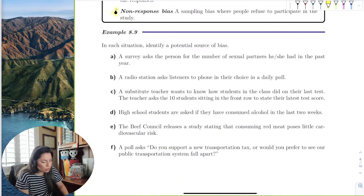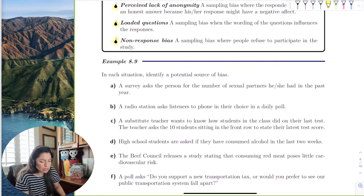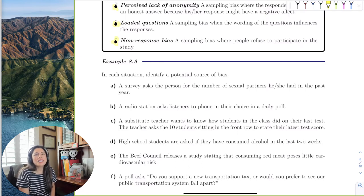Alright, let's go ahead and identify each source of bias. A survey asks the person for the number of sexual partners he or she had in the past year. I'm like, oh, I don't want to answer that. Even if it's not a lot or it is a lot, I don't want you to know that information about me. That's going to be the perceived lack of being anonymous. If you were going to have to ask this question for your study, you definitely would want the person to be anonymous.